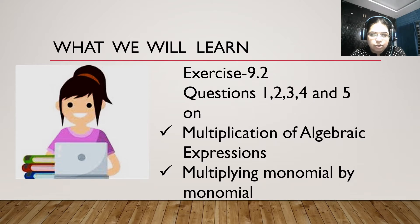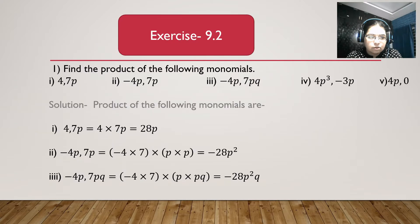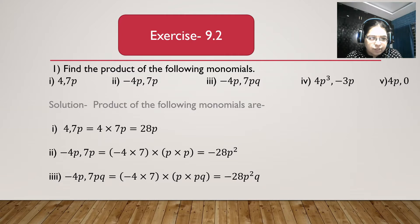Let's solve question number 1: find the product of the following monomials. First bit: 4 and 7p. 4 is a monomial and 7p is also a monomial. 4 multiplied with 7p equals 4 multiplied with 7 is 28, so we get 28p.